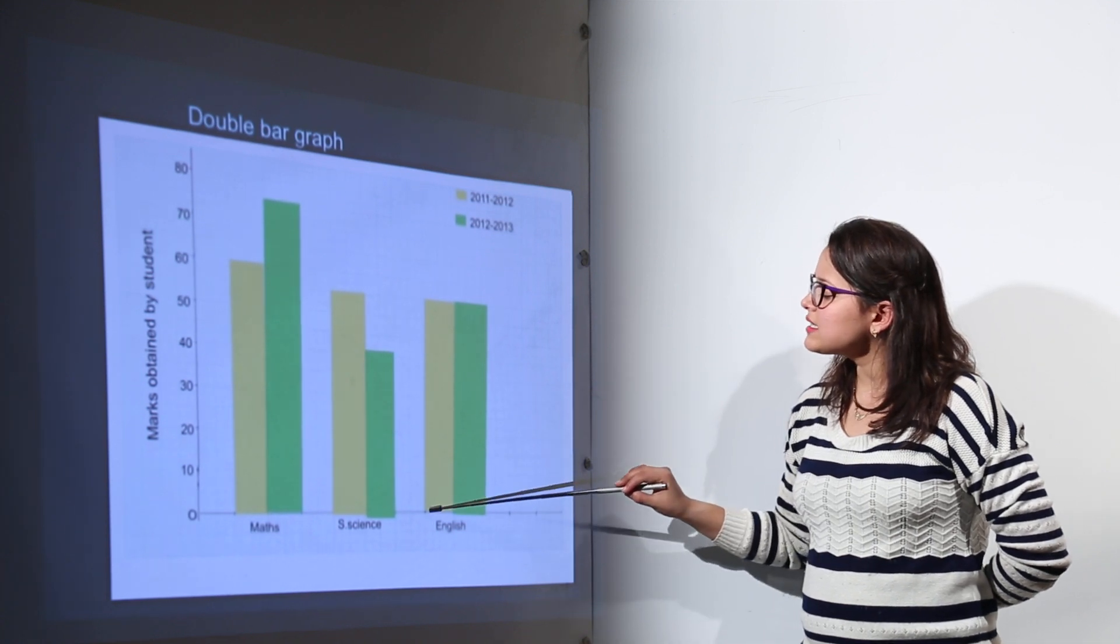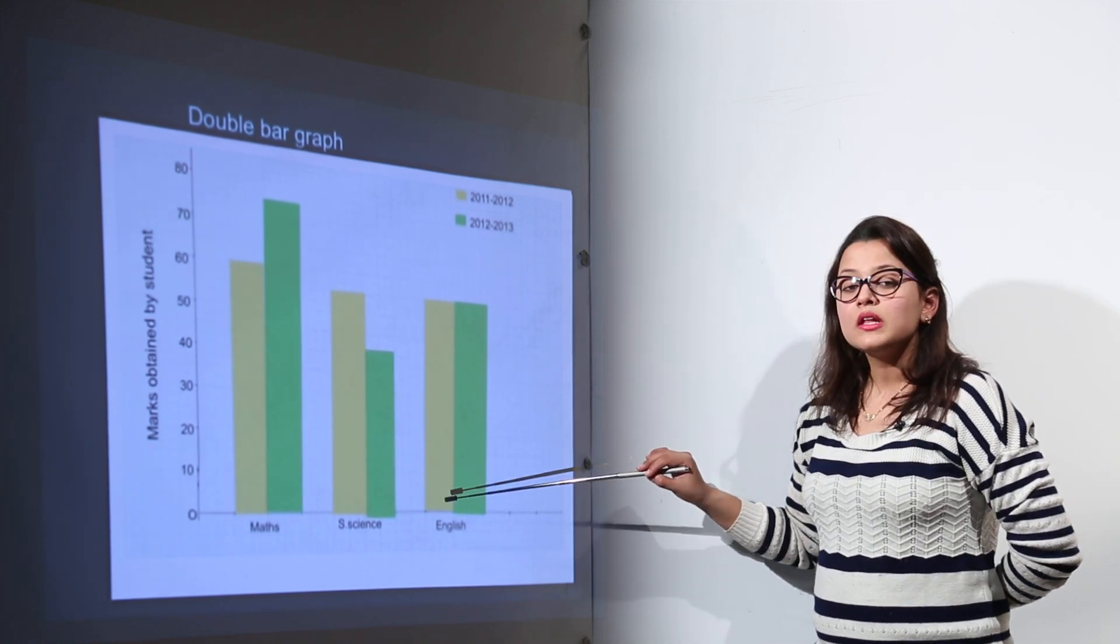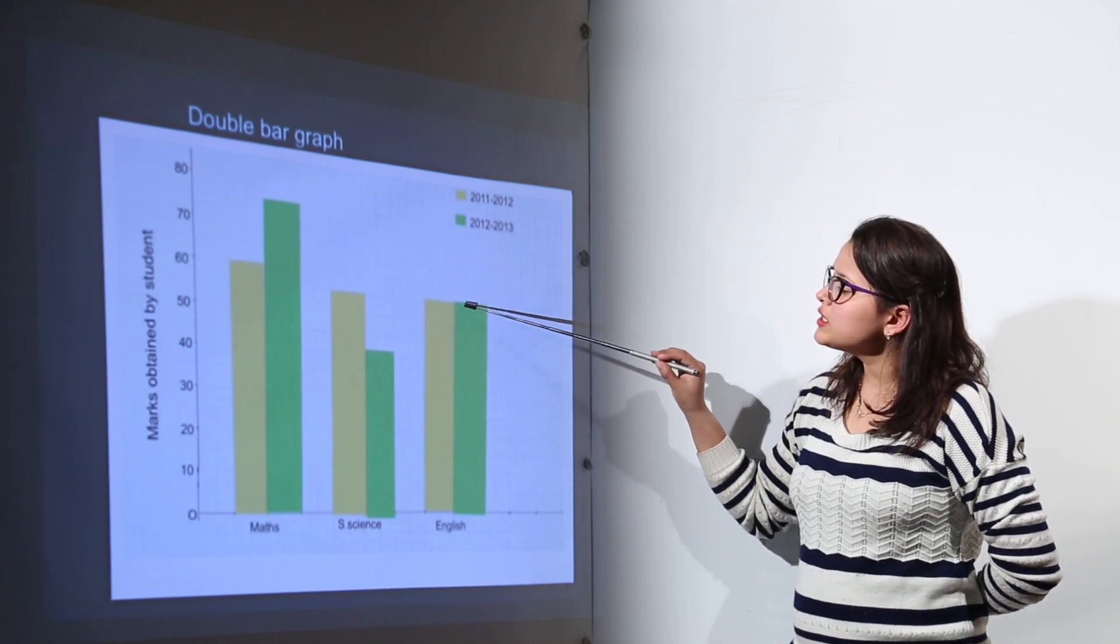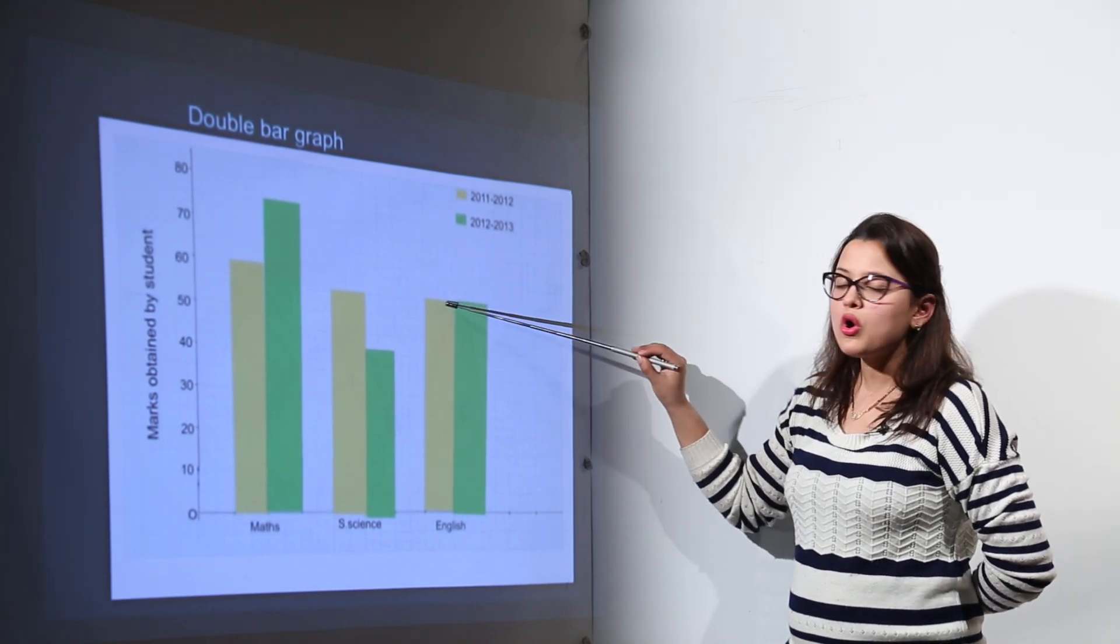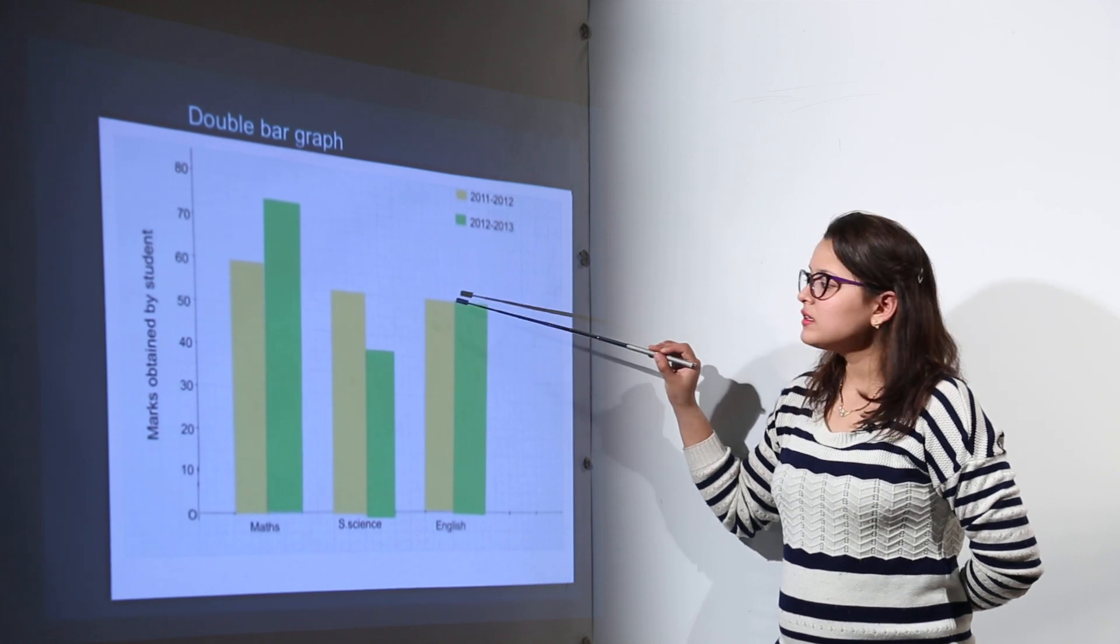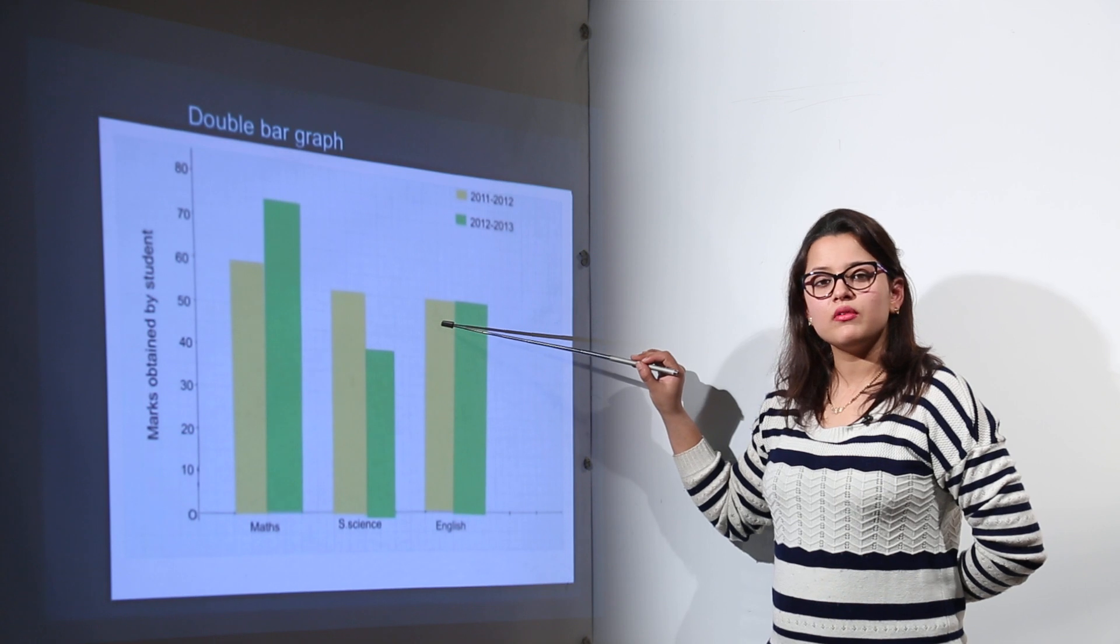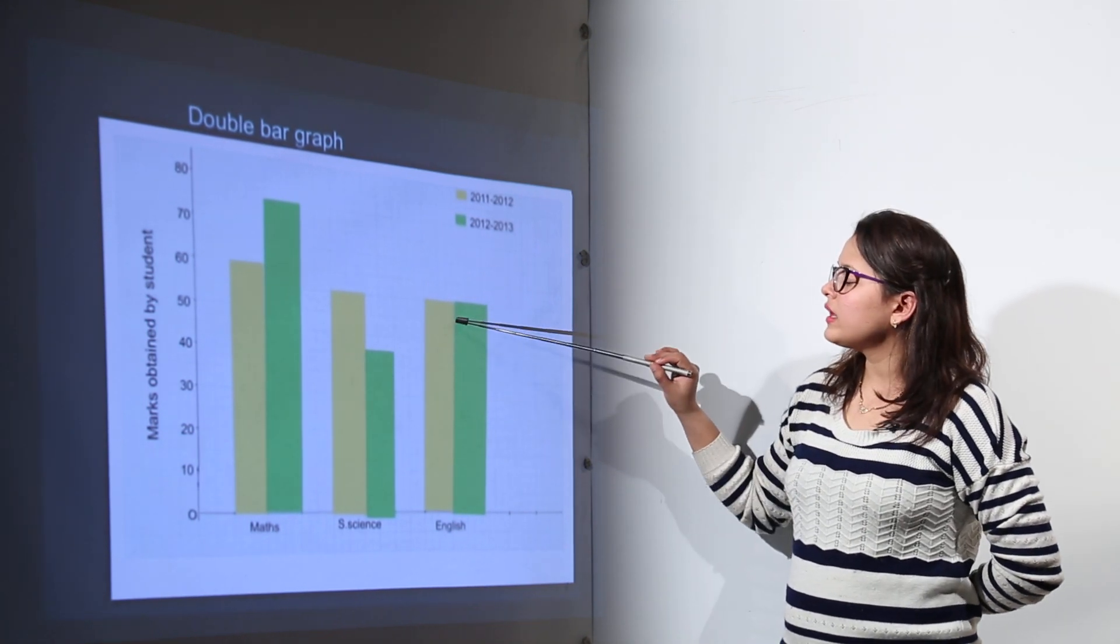Similarly moving on with the next subject that is English. Now in English we can see for both the years the student's performance has remained constant. Constant means the student has been doing the same way, performing the same level as he was performing in the previous year.